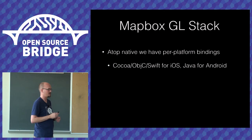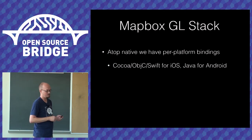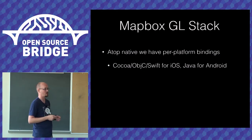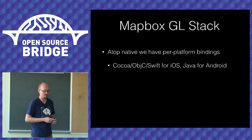On top of the C++ core, we built platform bindings: Objective-C and Swift on top for iOS, and Java on top for Android through the Android NDK using JNI to bind to C++. It's about 95% core C++ with the language bindings you'd expect for each mobile environment. All of this is open source on GitHub, and it's designed to support custom map tile sources using standard URL schemes.